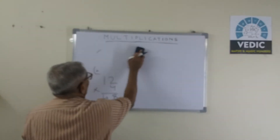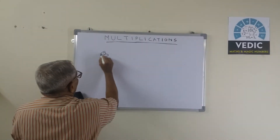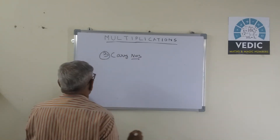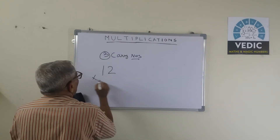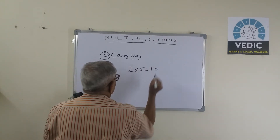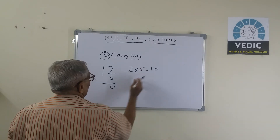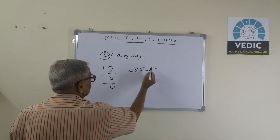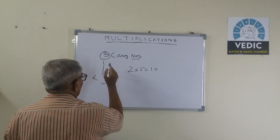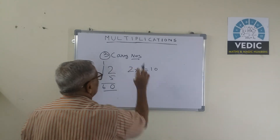Third: carry numbers. Friends, let us take 12 multiplied by 5. So 2 into 5 is equal to 10 — so 0 is the end number written in the units space. Now this 1 will be carried over to the tens space and it should be added to the tens space answer. So 5 into 1 is 5, plus 1 carried over equals 6. So this is an example for carry numbers.